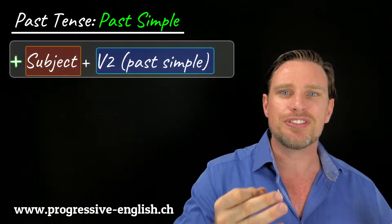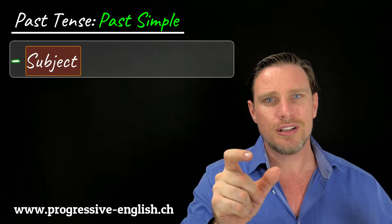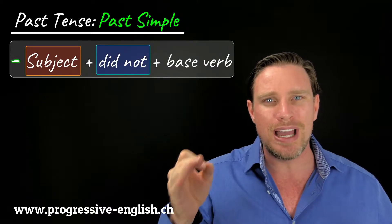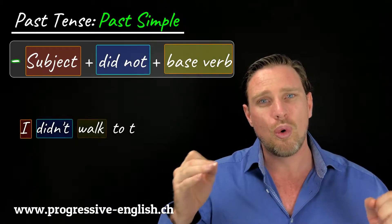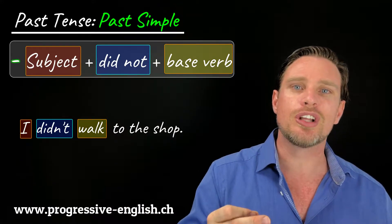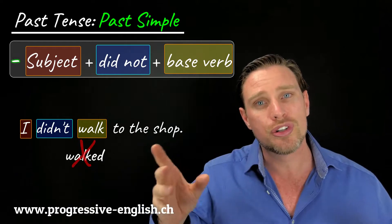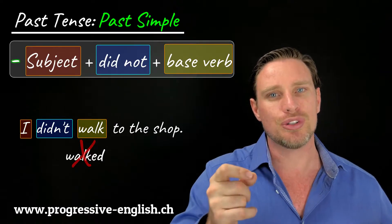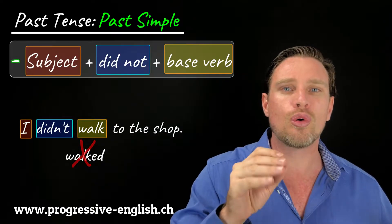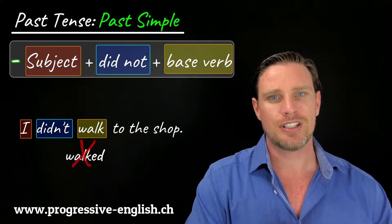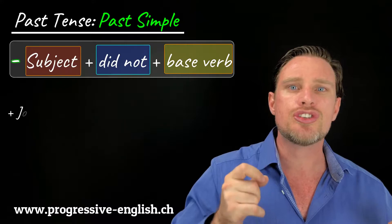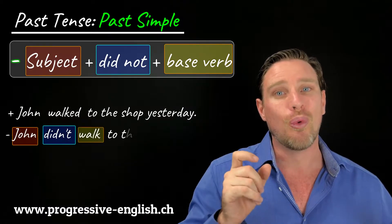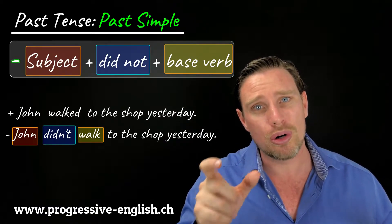To make negative sentences, we add 'did not' — normally contracted to 'didn't' — before the main verb. For example: I didn't walk to the shop. You will notice we don't say 'I didn't walked' — we don't conjugate the main verb in the negative because the auxiliary 'did' is already in the past tense. Positive: John walked to the shop yesterday. Negative: John didn't walk to the shop yesterday.